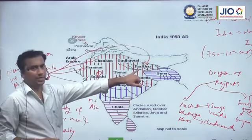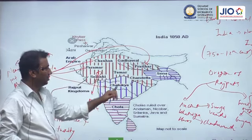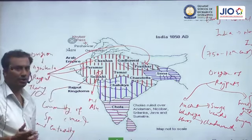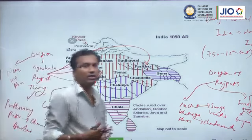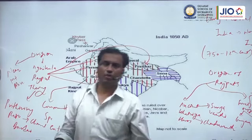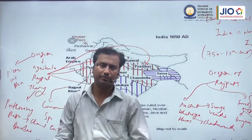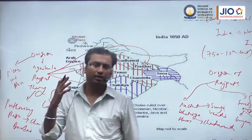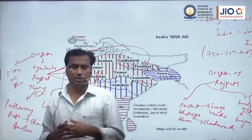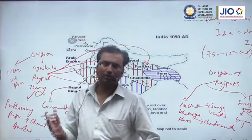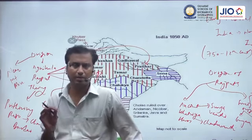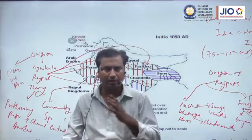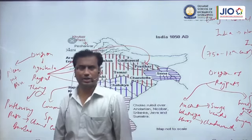The prominent Rajput families who claim their origin from this sacrificial pit at Mount Abu are called Parmar, Chalukya, Chavana, and Pratihar. So we have both the mythical origin of the Rajputs going back to the Mahabharata and Ramayana period, the foreign origin, and the Agnikula sacrificial fire origin. According to one more set of historians, Rajputs even had an origin within India itself — some historians hold the view that Rajputs did not come from outside and are a part and parcel of the Indian subcontinent.